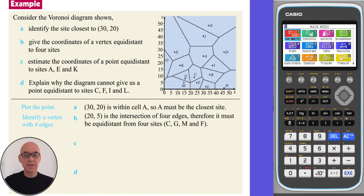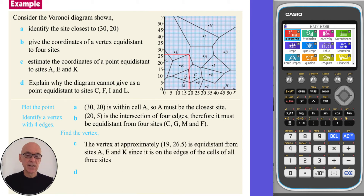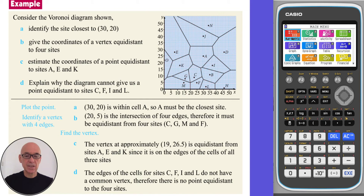In part C, we are asked to estimate the coordinates of a point equidistant to sites A, E and K. In part D, the vertex at (19, 26.5) is equidistant from sites A, B and K. Since the edges of the cells for sites C, F, I and L do not have a common vertex, there is therefore no point equidistant to those four sites.